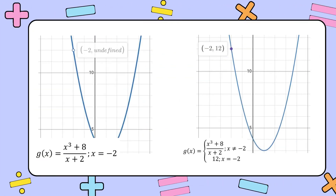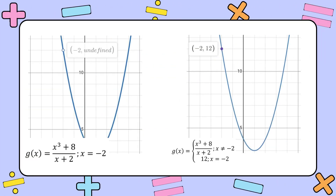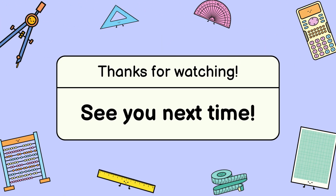Comparing the graphs of the original and redefined function, the original function has an undefined y-value at x equal to negative 2, whereas the redefined function gives a real value at x equal to negative 2, confirming this is a removable discontinuity. Thanks for watching — this is group 10 from 11 STEM Knowledge, signing off.